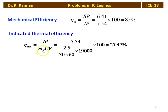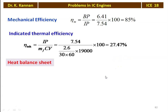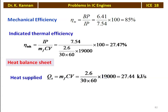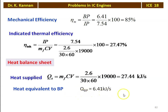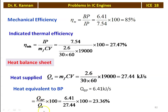Indicated thermal efficiency = IP / (mass of fuel × calorific value) = 7.54 / (2.6 / (30 × 60) × 19000) × 100 = 27.47%. Heat supplied = 2.6 / (30 × 60) × 19000 = 27.44 kJ/s, considered as 100%. Heat equivalent to brake power = 6.41 kJ/s, which is 6.41 / 27.44 × 100 = 23.36%.